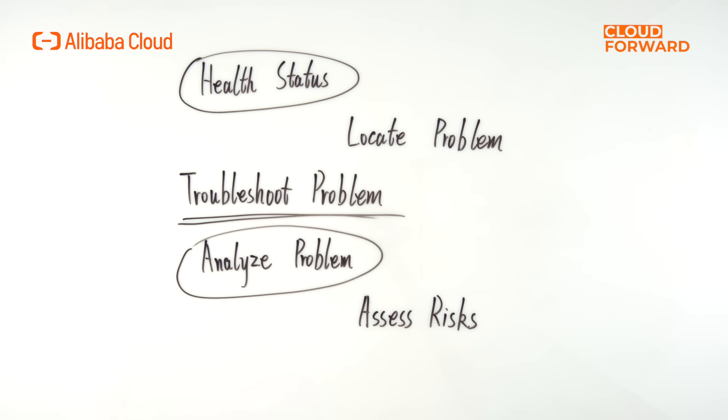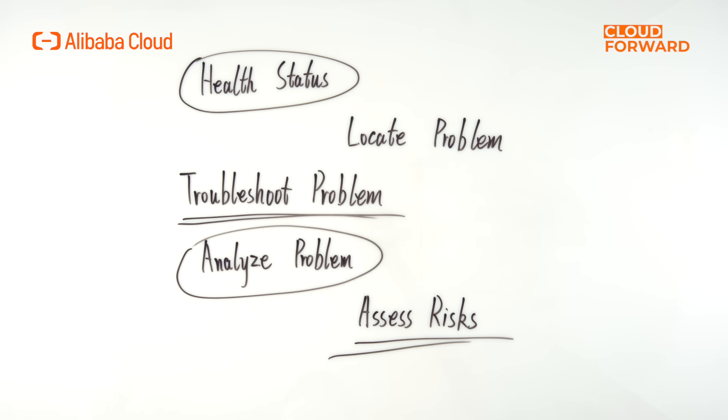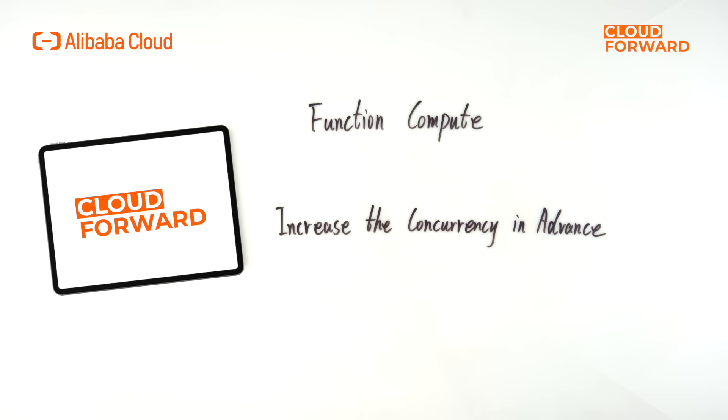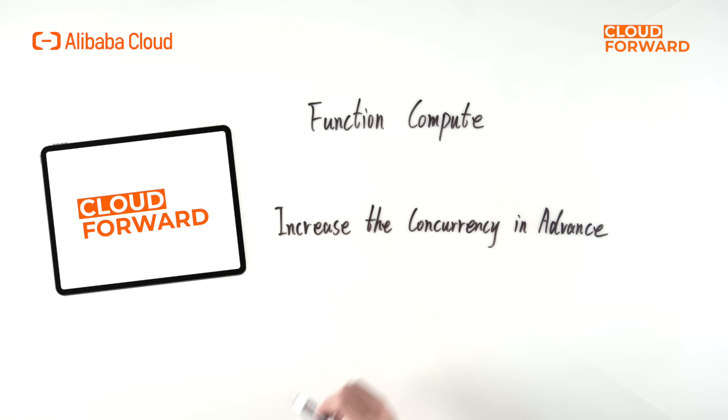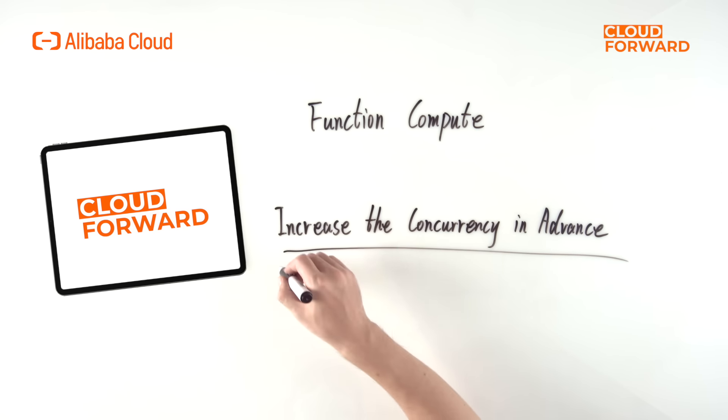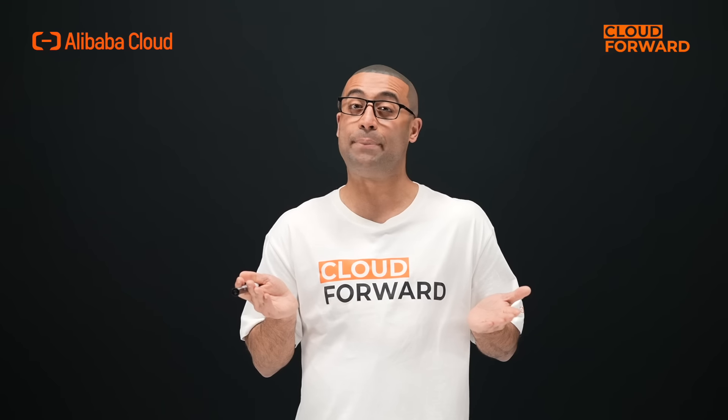When the system is running smoothly, it helps users assess risks and predict potential issues. In application development with function compute, if the concurrency of the function continues to rise, in order to avoid triggering throttling due to reaching the concurrency limit, developers need to increase the concurrency in advance — which is the ability to predict risks.